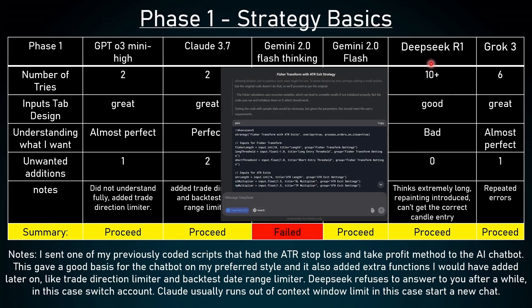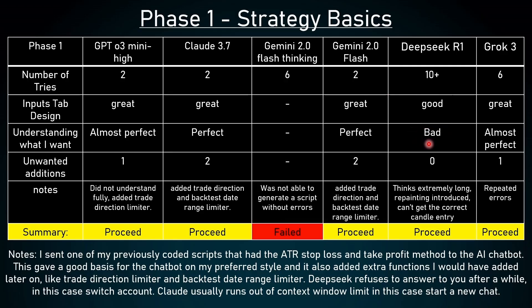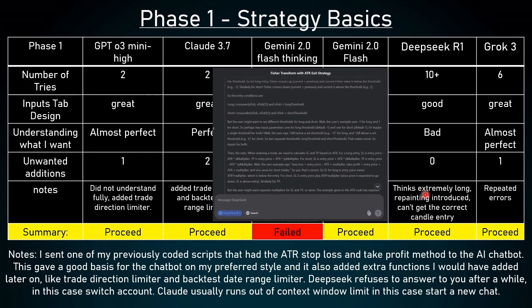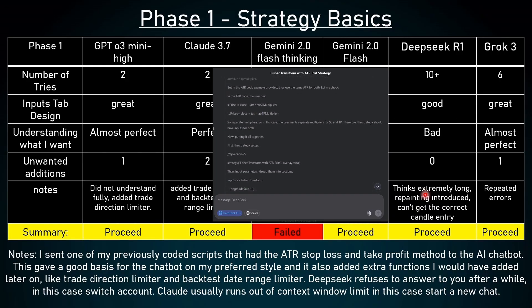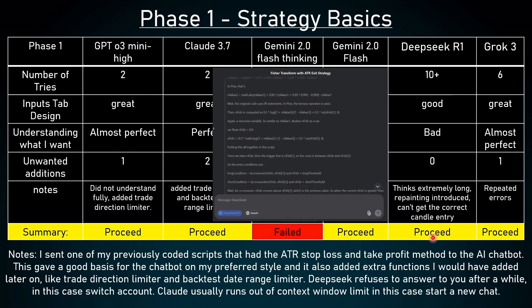Now DeepSeek R1 — this is the open source Chinese model — it took 10 plus tries to get the script correctly, and I almost gave up on it. However, at the end the input step design was good, but for understanding what I want I have to give it a bad rating because it took me 10 plus tries. There were no unwanted additions, which is good. My experience: this model thinks extremely long — it can think for multiple minutes — it introduced a 1-candle repainting issue which was really hard to solve, and it seemed like it just can't get the correct candle entry. But at the end, it can proceed.